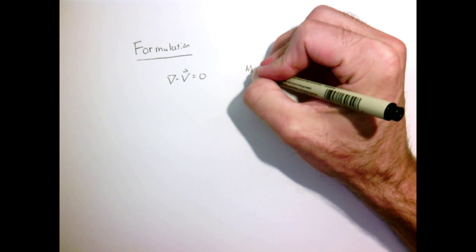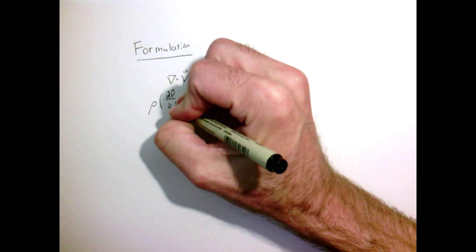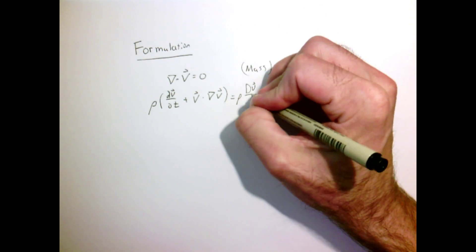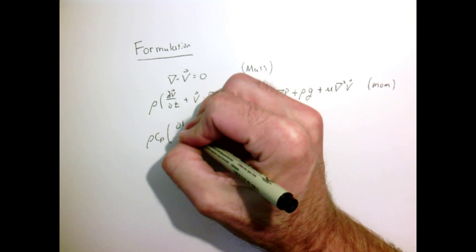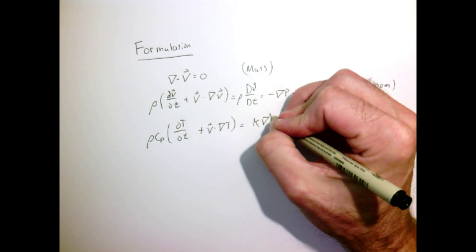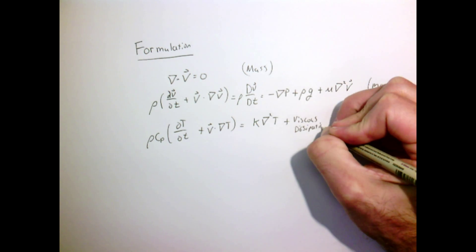We've returned to our trusty conservation of mass, momentum, and energy for an incompressible flow in a Newtonian fluid. We're going to ignore viscous dissipation in the energy equation. We have our usual terms that we've discussed many times throughout this course.